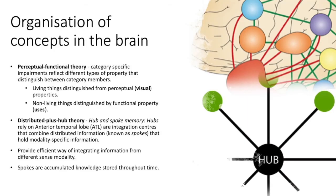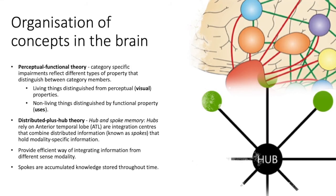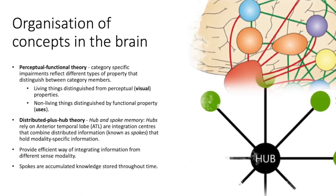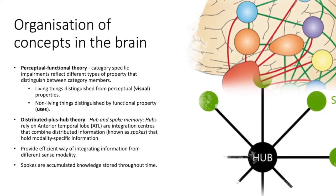Finally, organization of concepts in the brain. Perceptual functional theory stated that category-specific impairments reflected different types of properties that distinguish between category members. For example, living things were distinguished from perceptual properties based on visual cues,